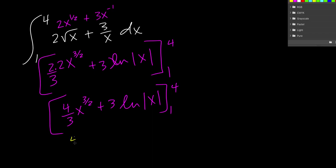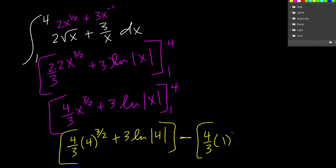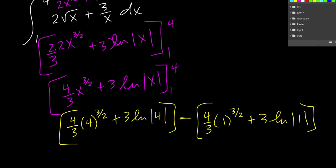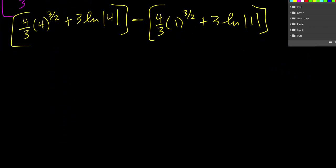If we plug in a 4 right here, we get 4 thirds times 4 raised to the 3 halves plus 3 natural log of the absolute value of 4. So if we plug in a 4, we take all of that and we subtract what we get when we plug in a 1. If we do 4 raised to the 3 halves, that's like saying 4 cubed under a square root. So that's 4 and 4 and 4. This pair comes out and that becomes a 2 and a 2 and that comes out. So this entire thing is really just 4 times 2 or 8.